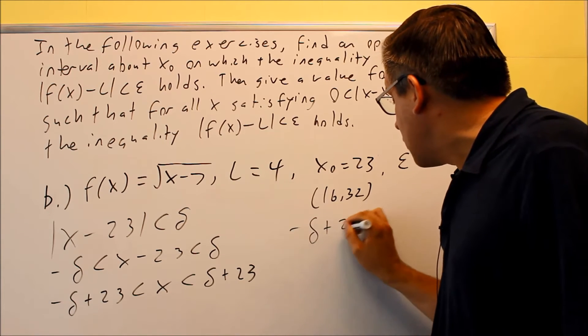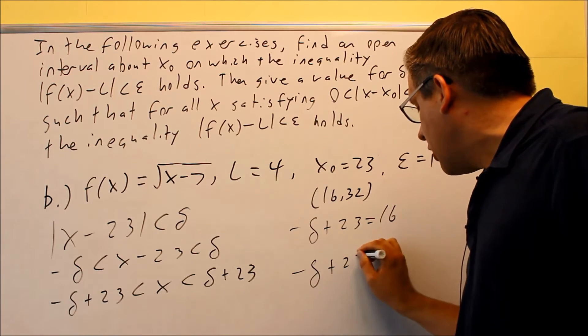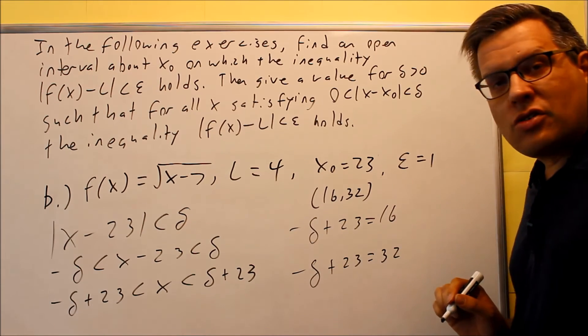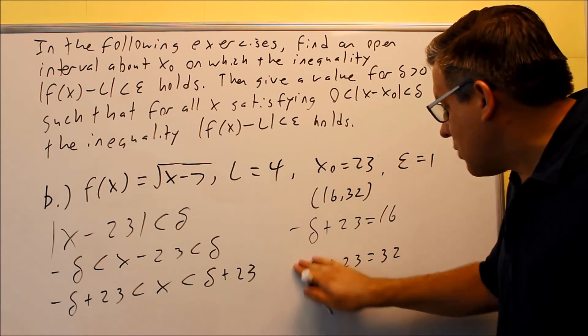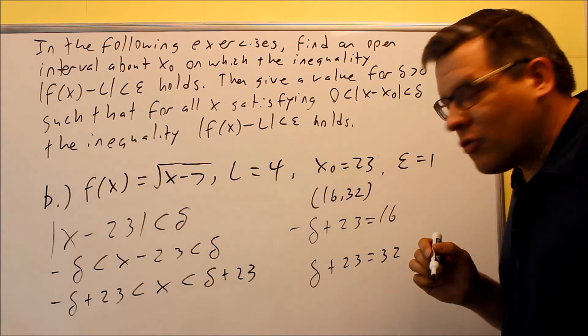So I'm going to do negative delta plus 23 equals 16. Negative delta plus 23 equals 32. So now I have both of these and this is positive. And so now when I set both of them equal, I'm going to solve and get two different values for delta.